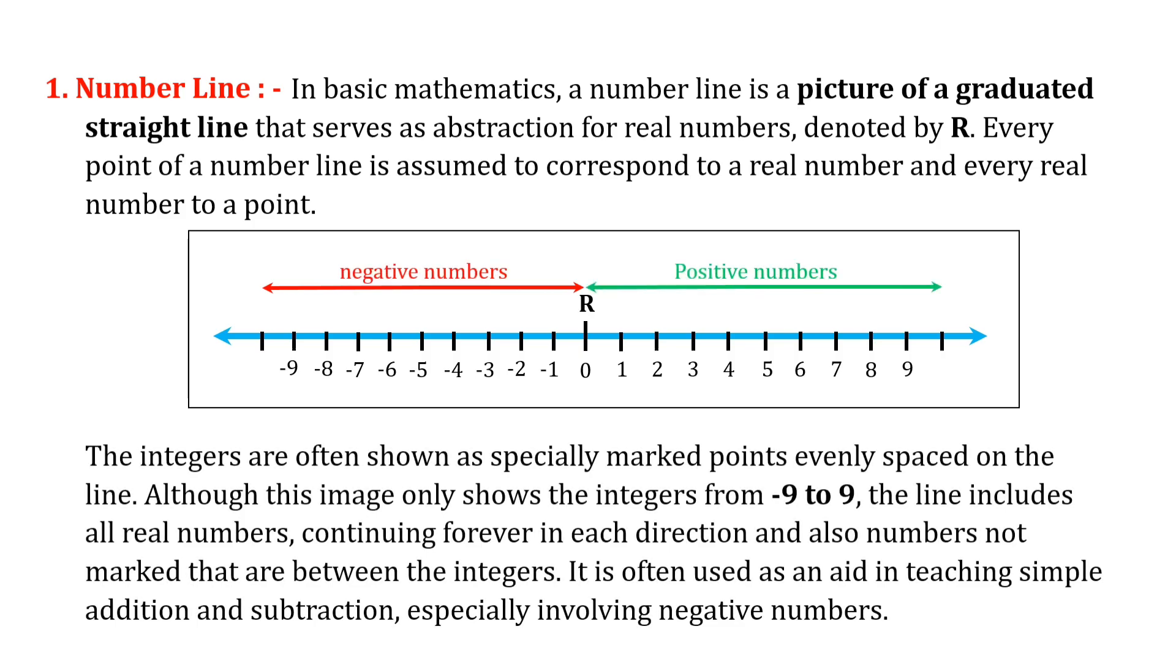Although this image only shows the integers from minus nine to nine, the line includes all real numbers continuing forever in each direction, and also numbers which are not marked that are between the integers. It is often used as an aid in teaching simple addition and subtraction, especially involving negative numbers.